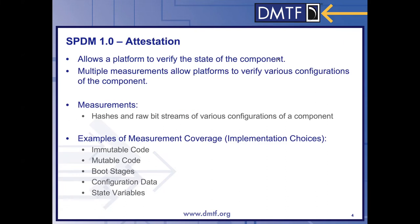Attestation is the other major feature. This feature allows the platform to verify the state of the component using various measurements, which are raw bit streams or bit hashes of various configurations of the component. Some examples of what measurements cover are immutable and mutable code, various points in the boot stages, and date variables or configuration data. This list is not exhaustive.